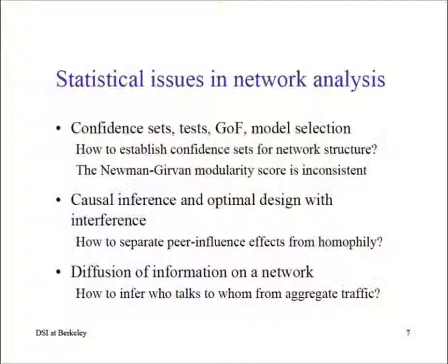There are three more problems. The asymptotic analysis of models for network data is not well developed. The first paper to open the way was by Peter Bickel and Aiyou Chen in PNAS. Since then, Karl Rohe, Bin Yu, Sourav Chatterjee at NYU, Patrick Wolfe at UCL, and David Choi at CMU have worked out different cases — still a small part of what's needed, but there's an established thread of literature.